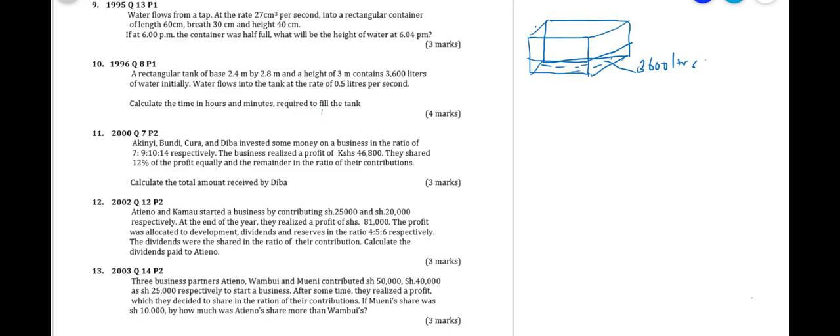So the first thing we have to do is identify the total capacity of the tank by finding the volume of a rectangle, which is given by length times width times height. The base you are told is 2.4 by 2.8 and the height is 3. So that's equivalent to 2.8 times 2.4 times 3, and that gives us 20.16 meter cube.